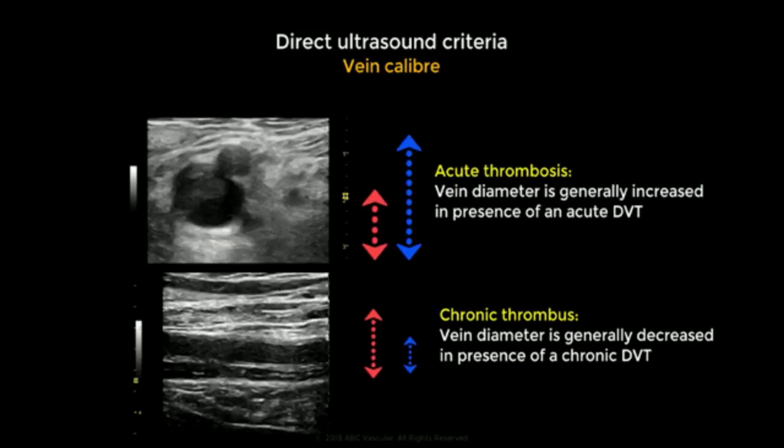There are two types of DVT. One is an acute DVT, which includes anechoic or hypoechoic thrombus and lack of venous compressibility. A chronic DVT is characterized by the presence of echogenic thrombus within the vessel's lumen with partial compressibility.